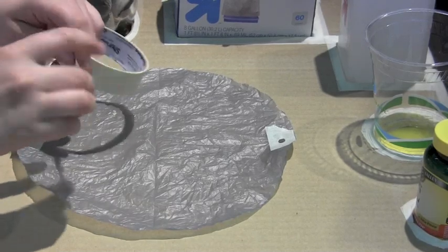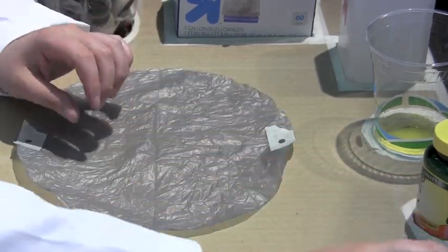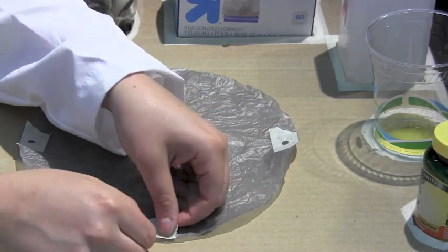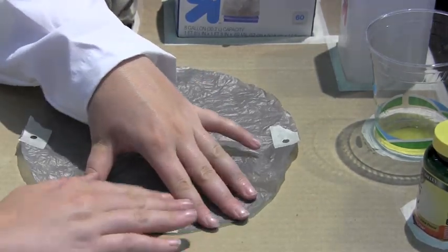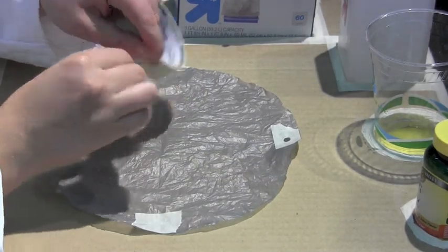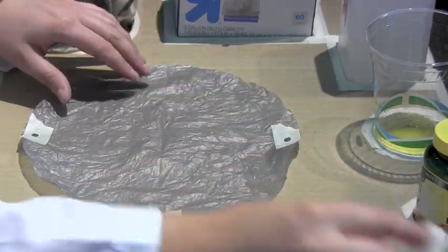Then take another inch long piece of tape and lay it across the crease. Take another inch long piece of tape and lay it across the crease at the other end.